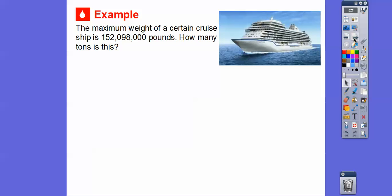The maximum weight of a certain cruise ship is, now let's say this together here. This says 152,098,000, okay? 152,098,000 pounds. How many tons is this?